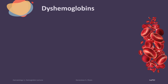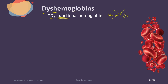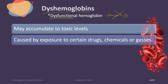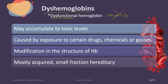The last type of abnormal hemoglobin is dyshemoglobins. They are named as such because they are dysfunctional hemoglobins — they do not function properly because they are unable to transport oxygen. Dyshemoglobins occur because of the accumulation of certain drugs, chemicals, or gases to toxic levels, which causes a modification in the structure of hemoglobin. Unlike thalassemia and hemoglobinopathy, which are usually inherited, dyshemoglobins are mostly acquired, with only a small fraction being hereditary.